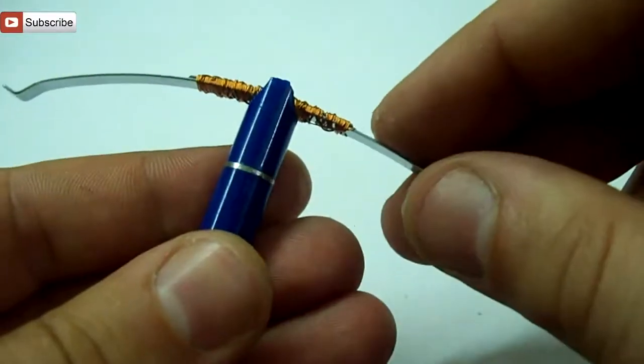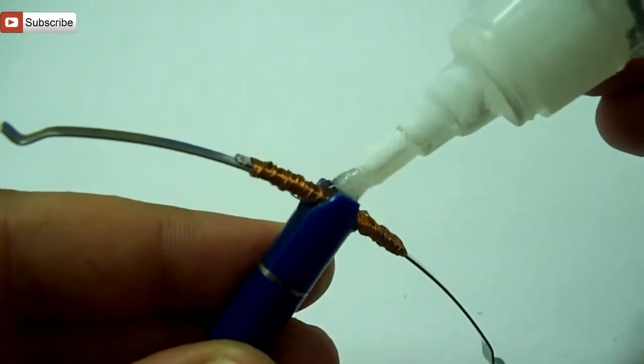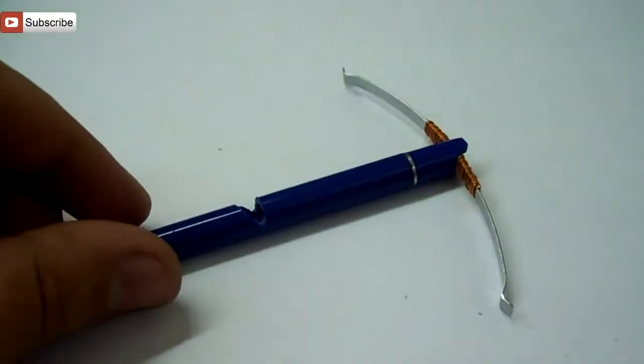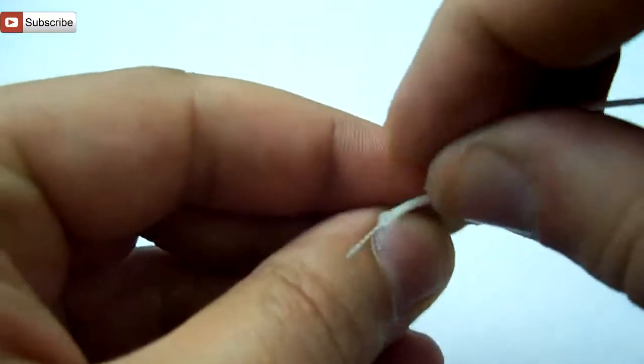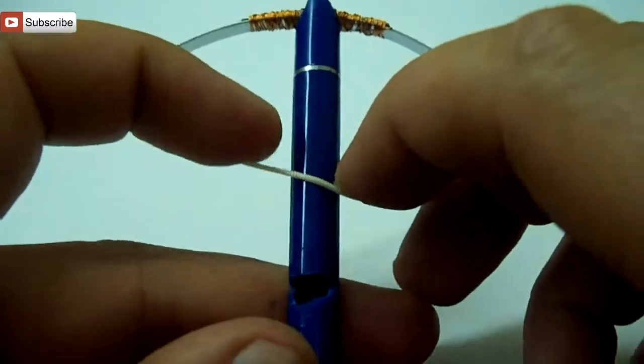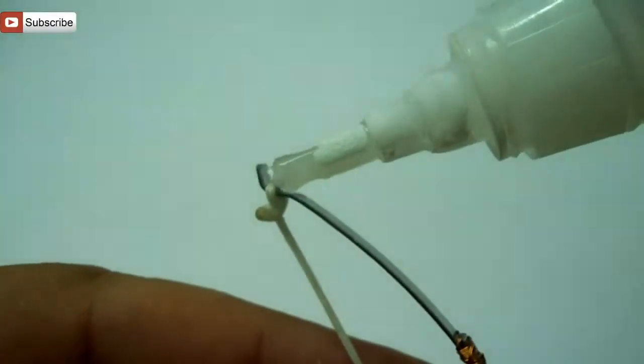Now we're going to place the bow on top of the pen where the gap is made and add some super glue to secure it. The bowstring is also glued with super glue, and now we test the bowstring.